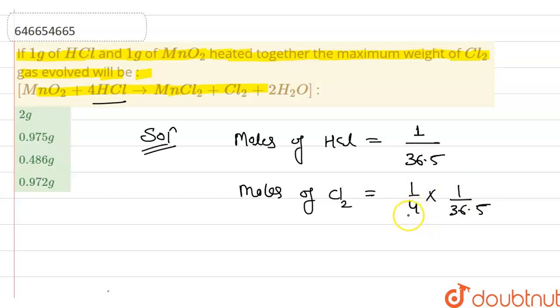So we divide by 4, and weight of Cl2 gas is equal to 1 by 4 into 1 by 36.5 into 71.